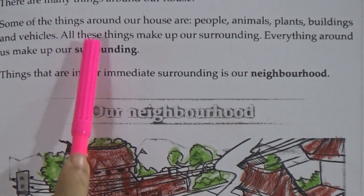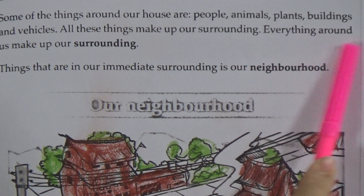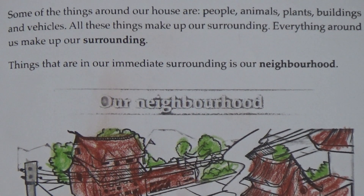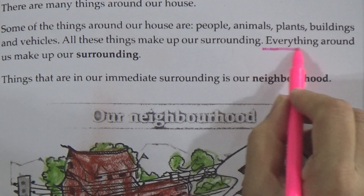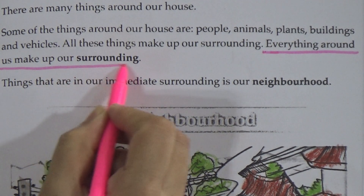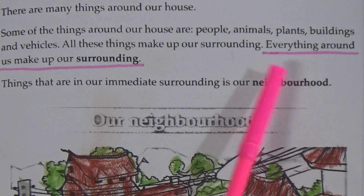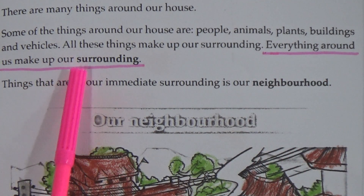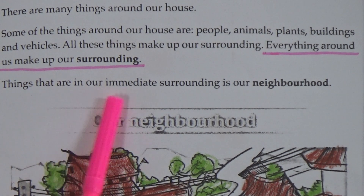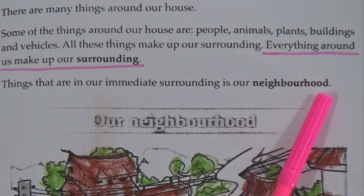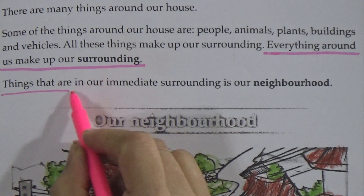All these things make up our surrounding. Everything around us makes up our surrounding. We have learned what 'surrounding' is — everything around us makes up our surrounding. Now, things that are in our immediate surrounding is our neighborhood.